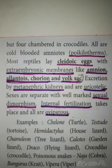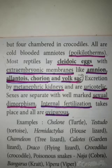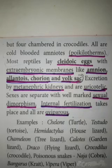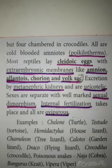Characteristic features of reptiles: they are terrestrial; they have dry and cornified skin; the heart is three-chambered, except crocodiles which have four chambers; all are cold-blooded, meaning poikilothermic; they are amniotes; they lay cleidoic eggs with shells and extra membranes like amnion, allantois, chorion and yolk sac; they are uricotelic; they show sexual dimorphism; fertilization is internal; and all are oviparous.